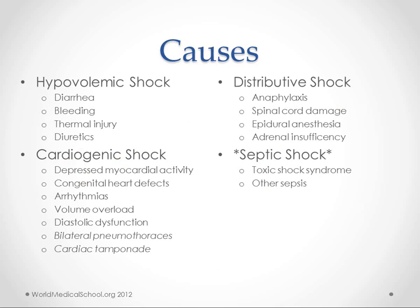The causes are usually broken up into three categories, though I've got four here. Hypovolemic shock is anything that causes a low volume of blood — dehydration from diarrhea, not getting enough water, bleeding, thermal injury, and diuretics. Cardiogenic shock means the pump isn't working well enough. Examples include depressed myocardial activity, congenital heart defects, arrhythmias, volume overload, diastolic dysfunction, bilateral pneumothoraces, and cardiac tamponade, which are more common in infants.